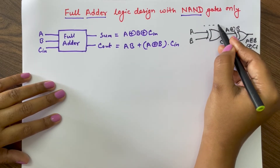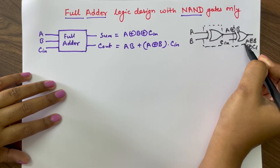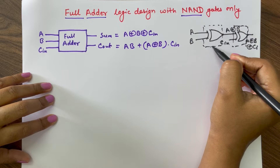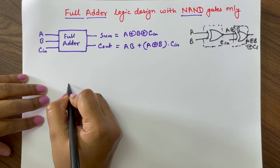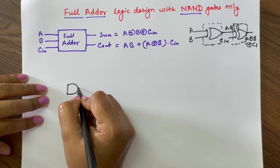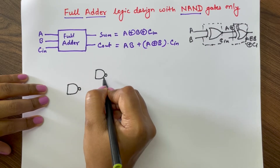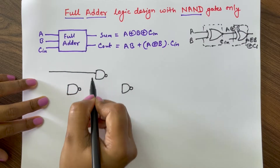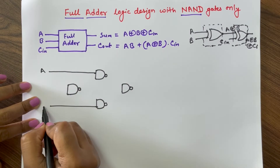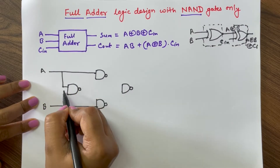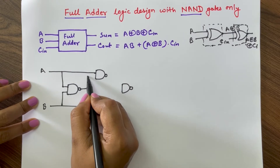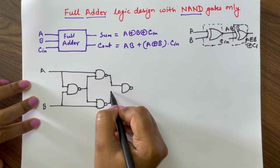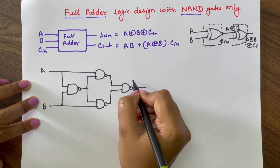We need to design these two XOR gates with NAND gates. We have already studied how to design an XOR gate with NAND gates, so we will design two similar XOR gates. For designing each XOR gate we need four NAND gates. Inputs A and B are given to the first NAND gate; the output of the first NAND gate connects to the second and third NAND gates, and their outputs connect to the fourth NAND gate, giving A XOR B.